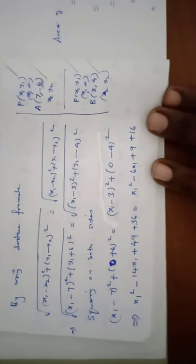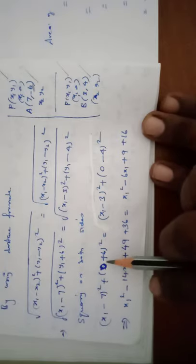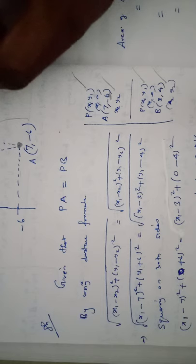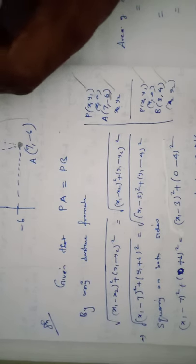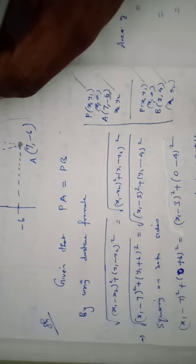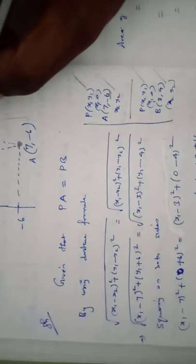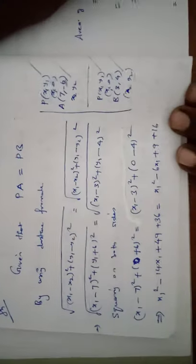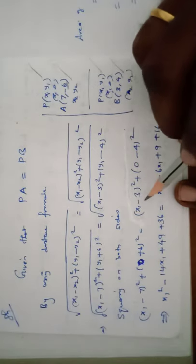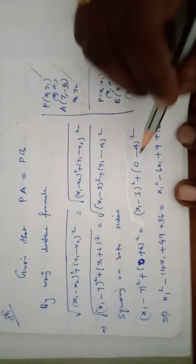Squaring both sides, the square roots cancel. Since y1 equals 0, we get: (x1 minus 7) squared plus (0 plus 6) squared equals (x1 minus 3) squared plus (0 minus 4) squared.